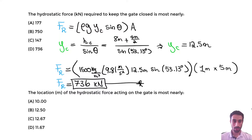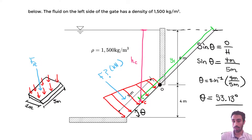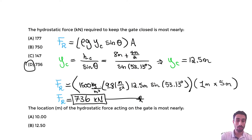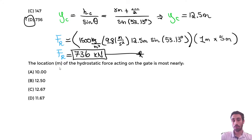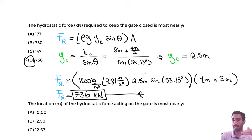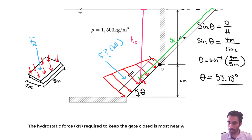So 736 kN is the answer for this portion. I used the equation directly from the handbook rather than the more complicated volume-based method. The last step is finding the location of this hydrostatic force. From the handbook, the force always acts at the center of pressure — slightly below the centroid, always.